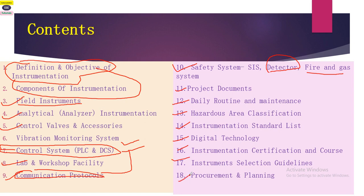The eighteenth point is planning and procurement, which is very important for instrumentation engineers in the planning section. There are instruments working in the field that we need to procure and maintain as a spare list, so that whenever an instrument becomes faulty, it can be replaced quickly.